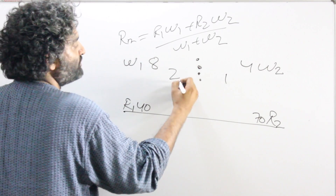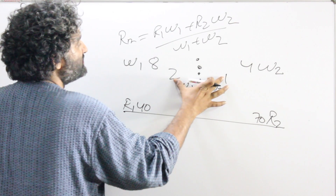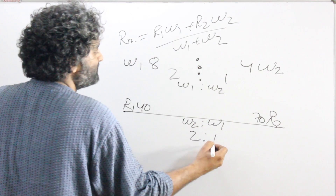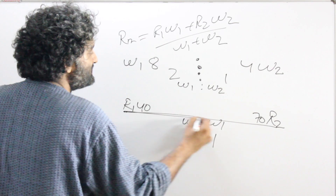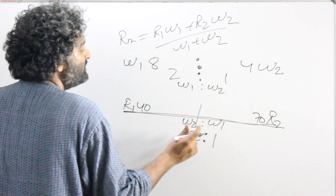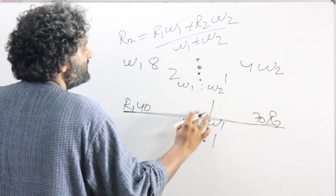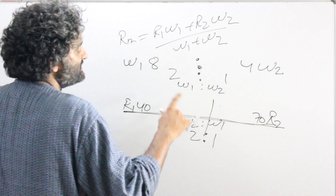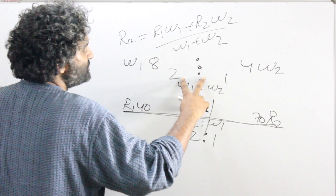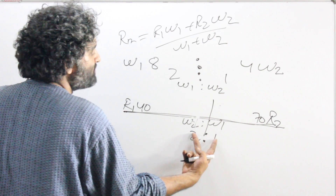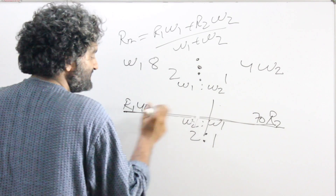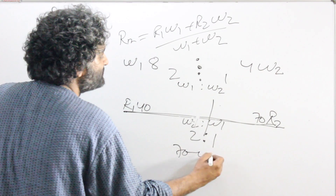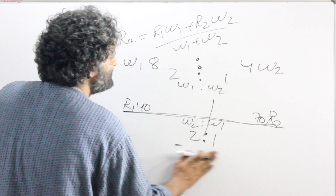Once you've got this ratio — or you could have just called it W1 is to W2 — flip this ratio and write it down as W2 is to W1, which is 1 is to 2. Writing this ratio below the line means you have to divide this line into two parts in the ratio 2 is to 1. This line is 70 minus 40, so the length of this line is 30.